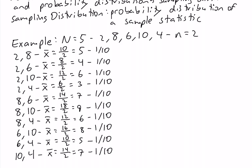Now let's create the probability distribution for the sample mean in this example. We'll create a table with two columns: in the first column we'll have the different values of the sample mean, and in the second column the corresponding probabilities, written f of x. The different possible values for the sample mean are 3, 4, 5, 6, 7, 8, and 9.